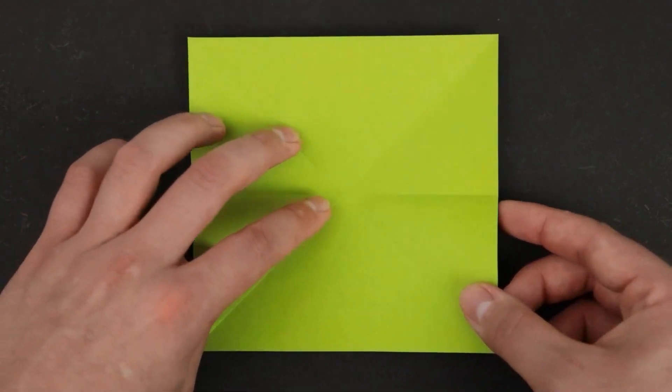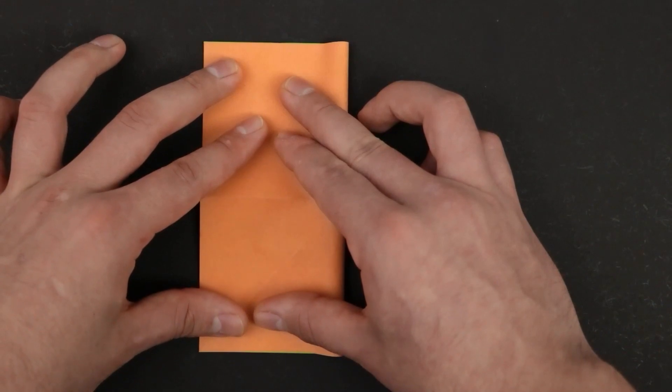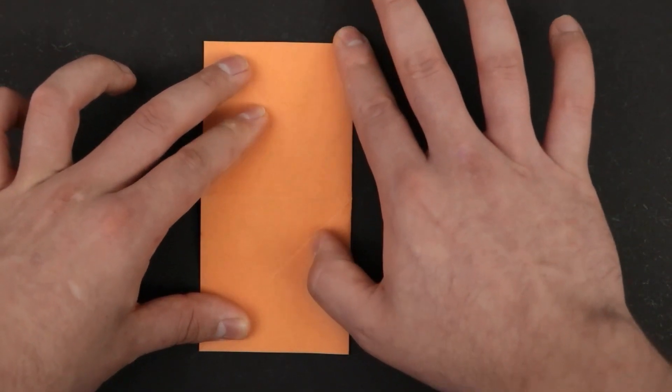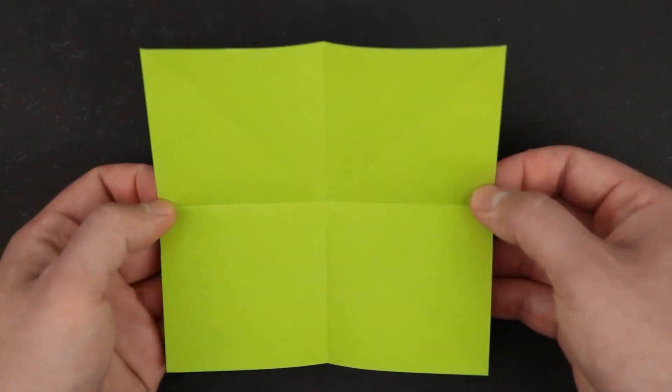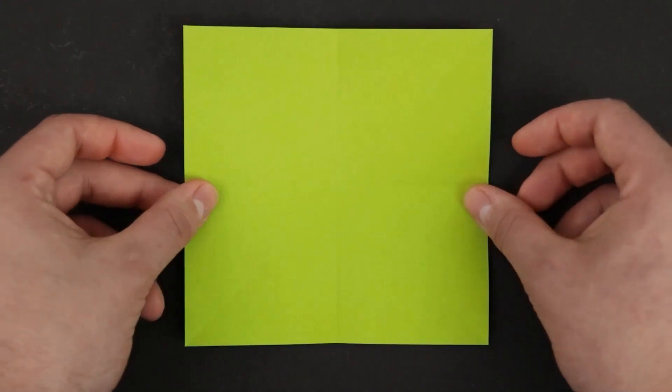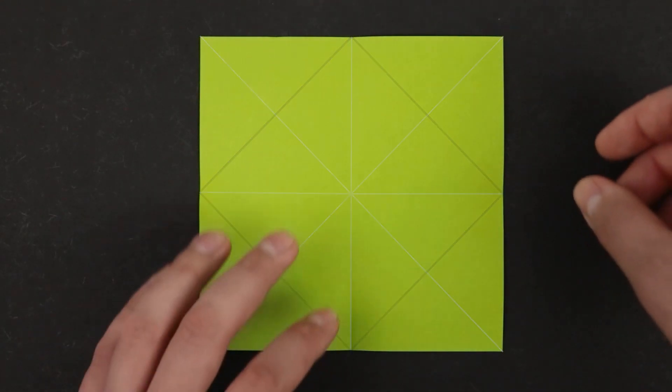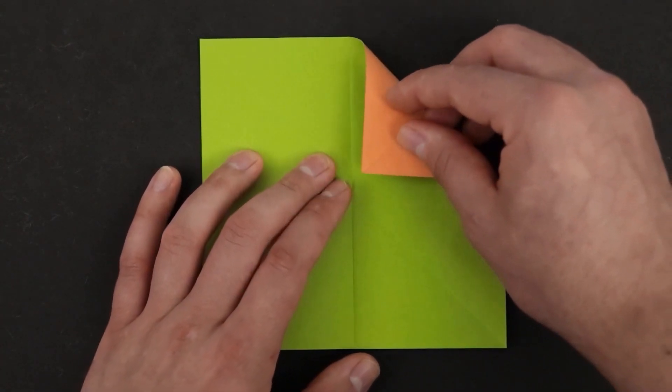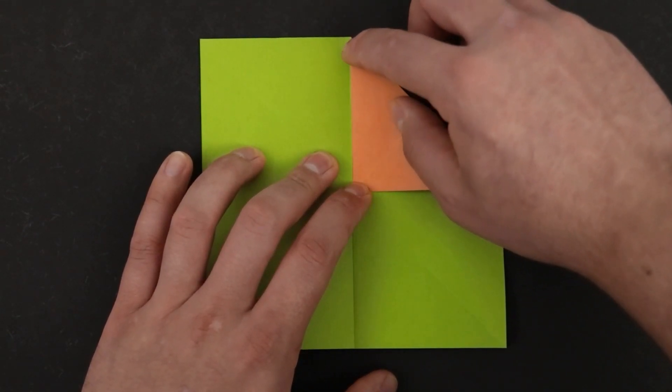And now let's fold the right side to the left. Okay, now we have all these lines that we can use as a guide. To the next step we need to fold all four corners to the middle. We can start here on the top. Just bring it to the middle, as exact as you can, and reinforce.